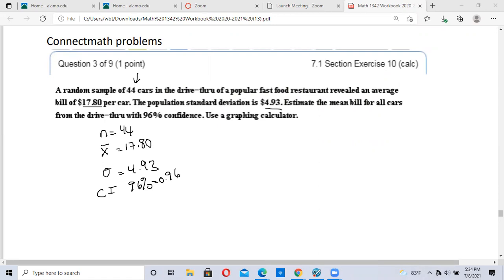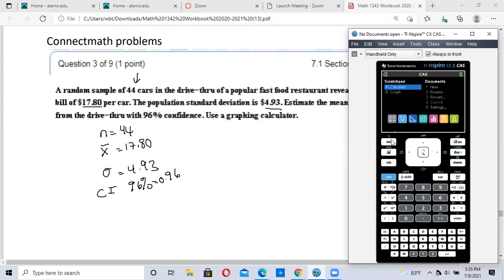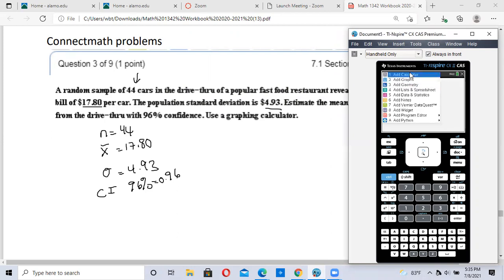Create a new calculator page. Menu, number 6 statistics, number 6 confidence interval, number 1 Z interval. There's no data here, so we click on stats, hit OK, and fill in the boxes. Population standard deviation was 4.93, the mean was 17.80, n was 44, and our confidence level is 0.96. We hit OK.